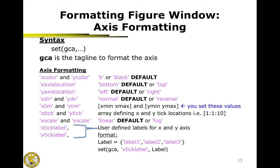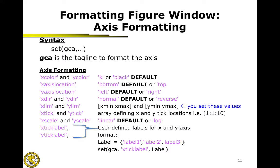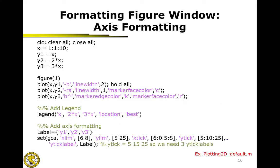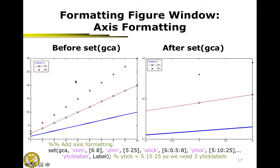That's it for axis formatting using the GCA. Here are some visual examples from the notes to walk you through. This is the previous class example with the legend added, plus axis formatting. The y-axis label is shown here, the x-axis is confined from 6 to 8, the y-axis from 5 to 25. We changed the limitation, the number of ticks — only 3 ticks — and manually set labels y1, y2, and y3.